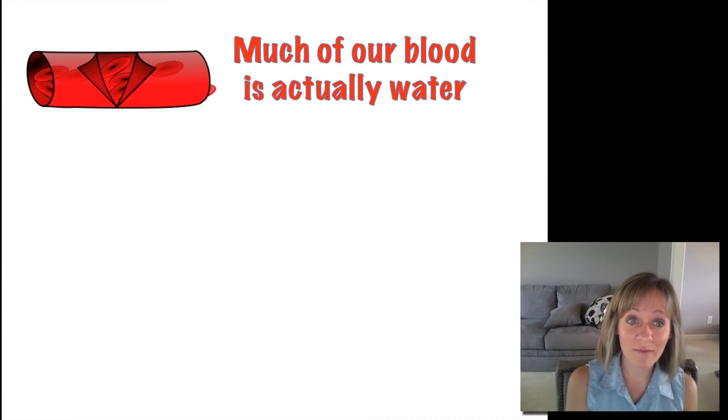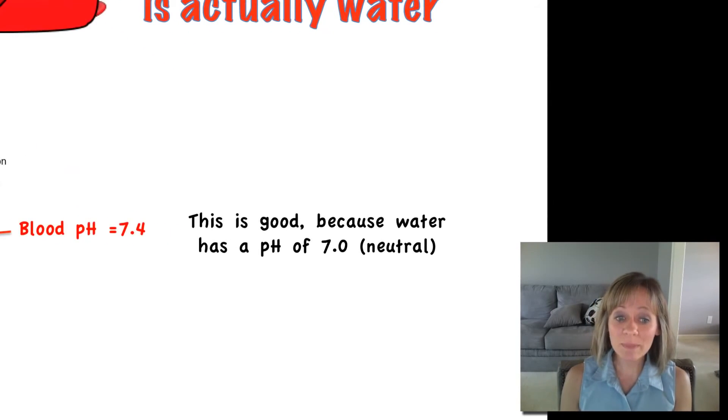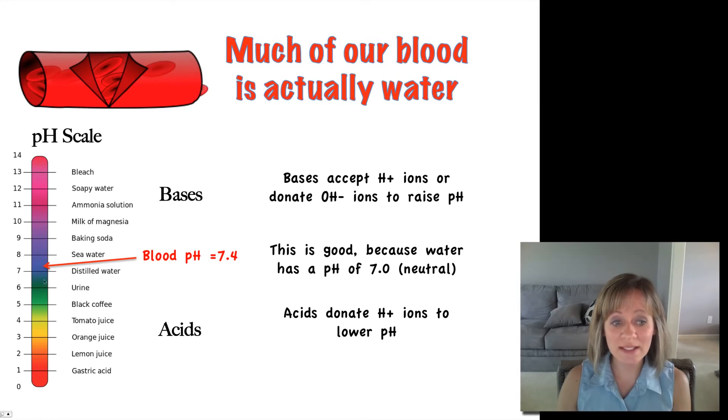Let's go back to this idea of our blood and how much of our blood is actually water. This is a great thing because water is neutral—it has a pH of 7, and blood pH is about 7.4, so it's a little on the basic side but not much, pretty much neutral. So let's look at this pH scale. Bases are on this end of the pH scale, above 7 and up to 14—bleach, soap, ammonia, baking soda. Bases accept hydrogen ions from other atoms or molecules, or we can consider bases to donate hydroxide ions.